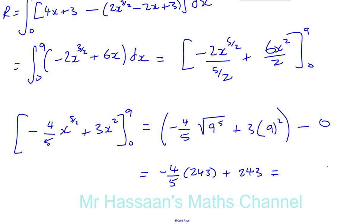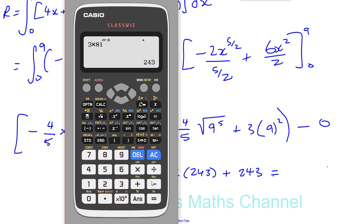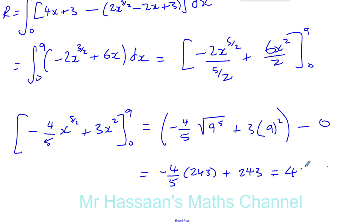Okay, so let's work what that is. We've got minus 4 fifths times 243. So you've got 243 times 4 divided by 5. And that has to be subtracted from 243. So 243 minus your answer. That gives you 48.6 square units. 48.6 units squared.